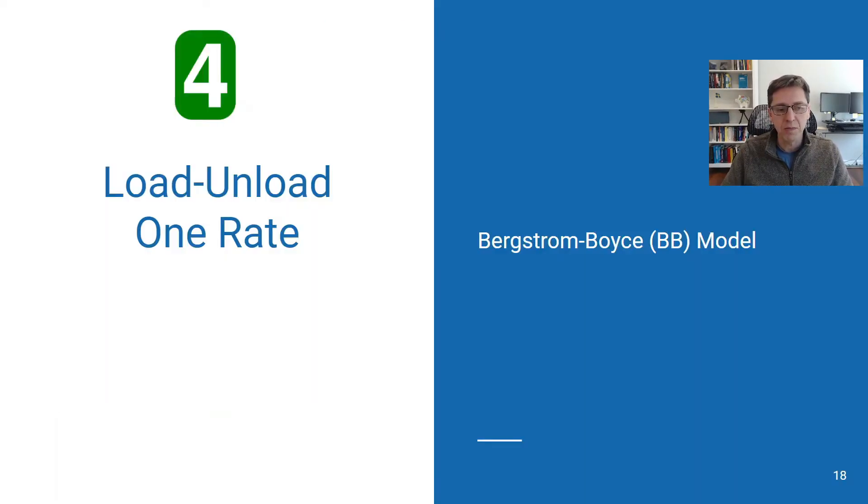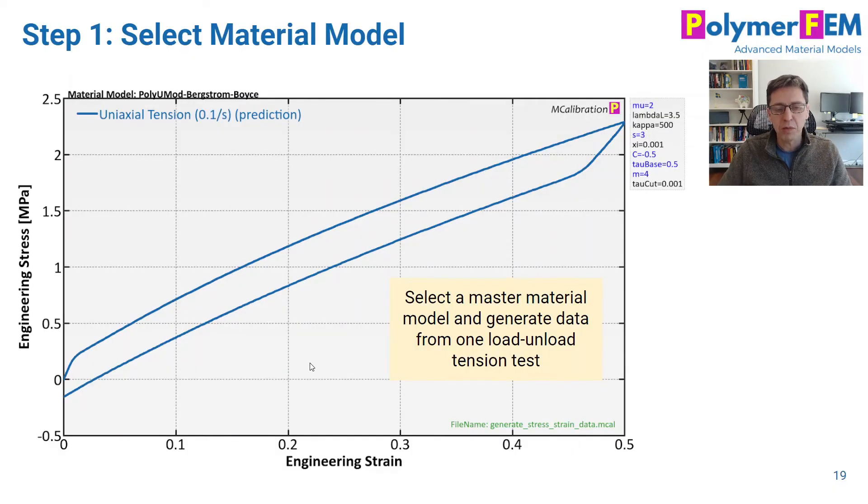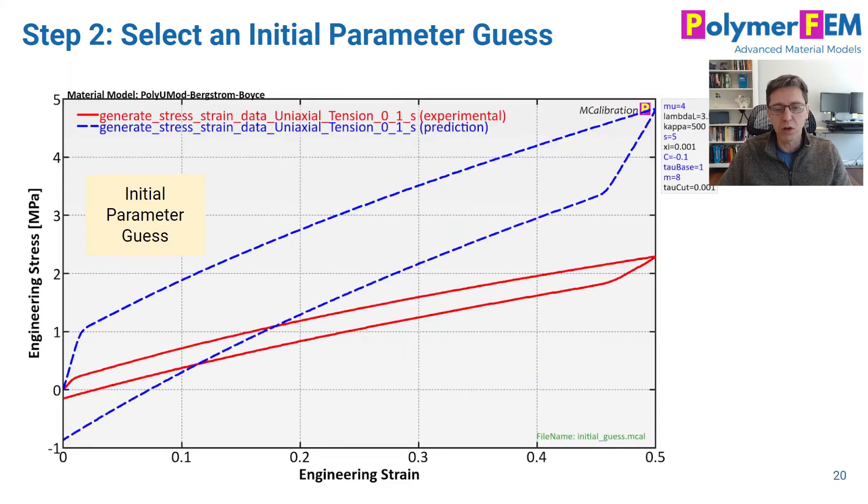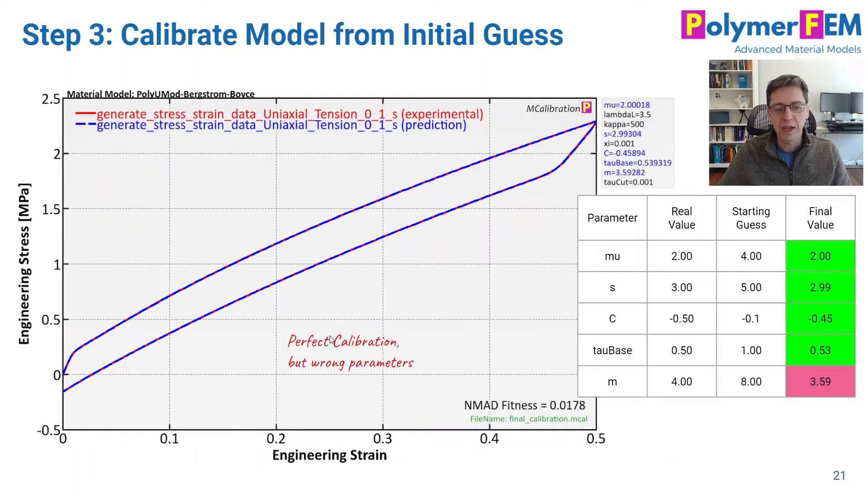So how about this? How about just loading and unloading at a single strain rate? Will that work? Same strategy. We generate an experimental data file using a virtual load case. Here's the initial guess from which I will run the calibration. And as you can see, we can match the data really, really well, the stress-strain data.